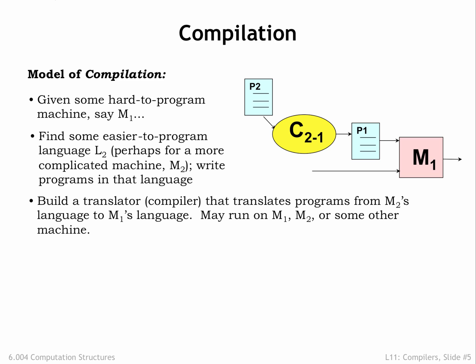If we're willing to pay the upfront costs of compilation, we'll get more efficient execution. And with different compilers, we can arrange to run P2 on many different machines without having to rewrite P2.